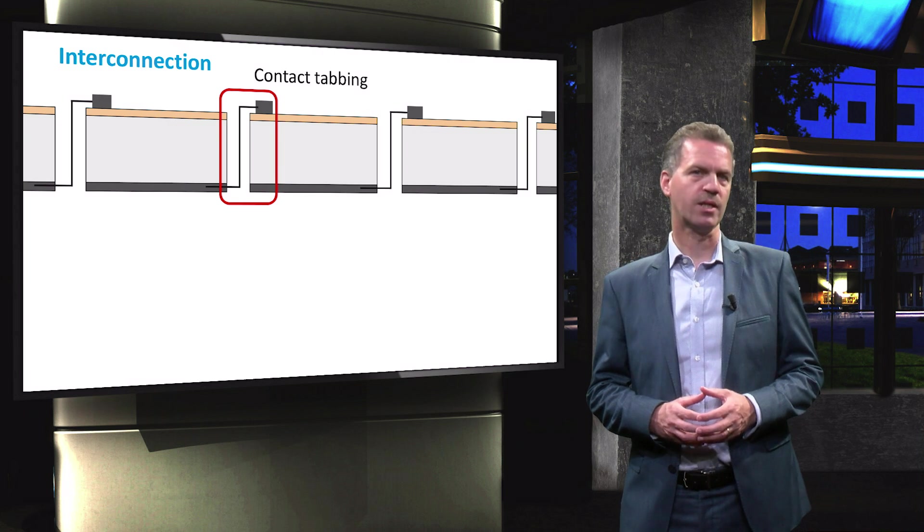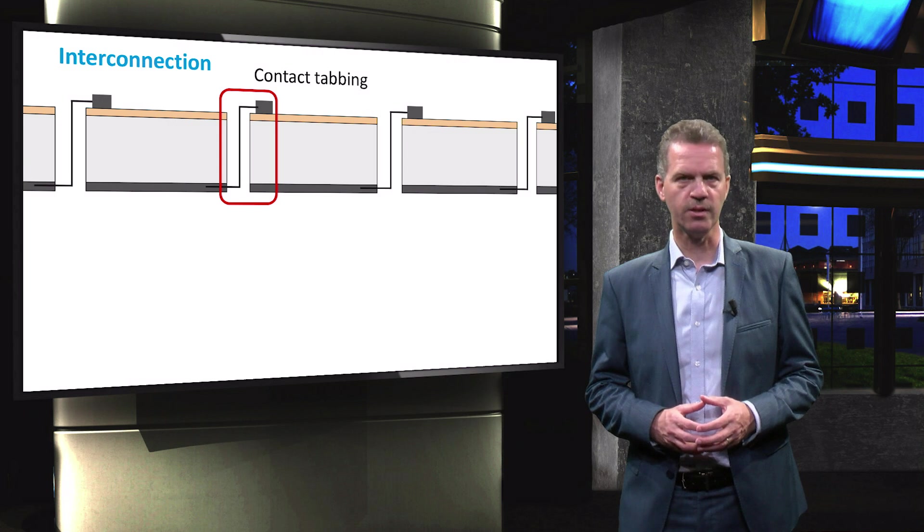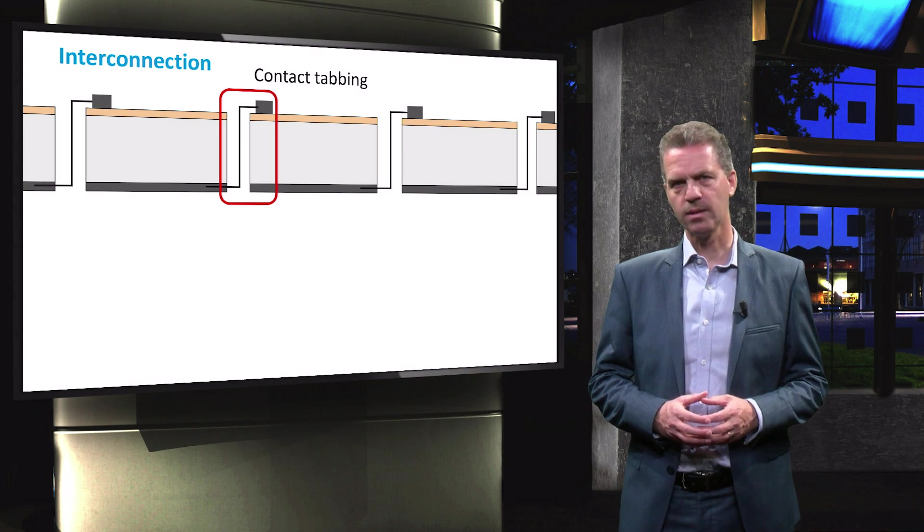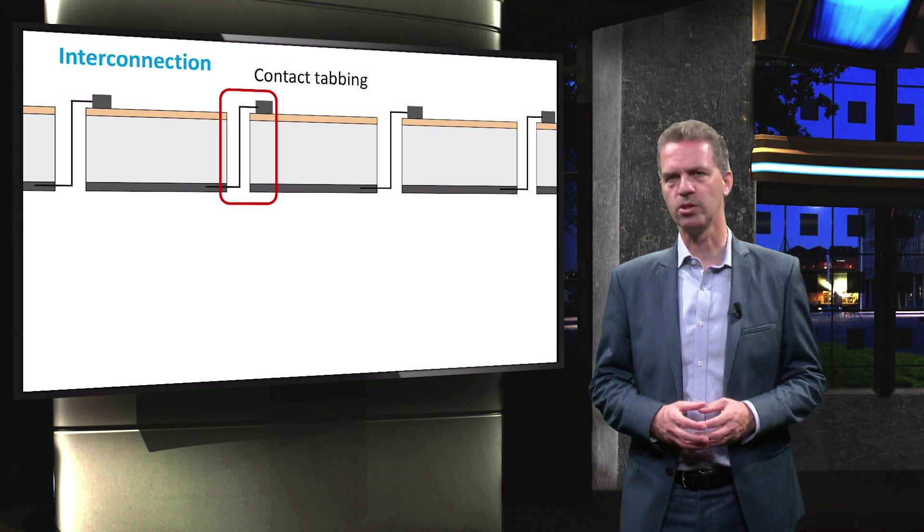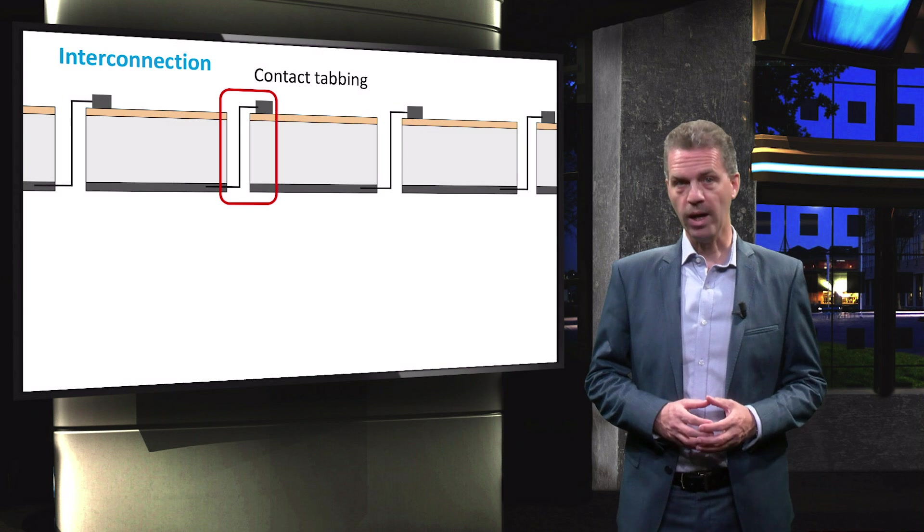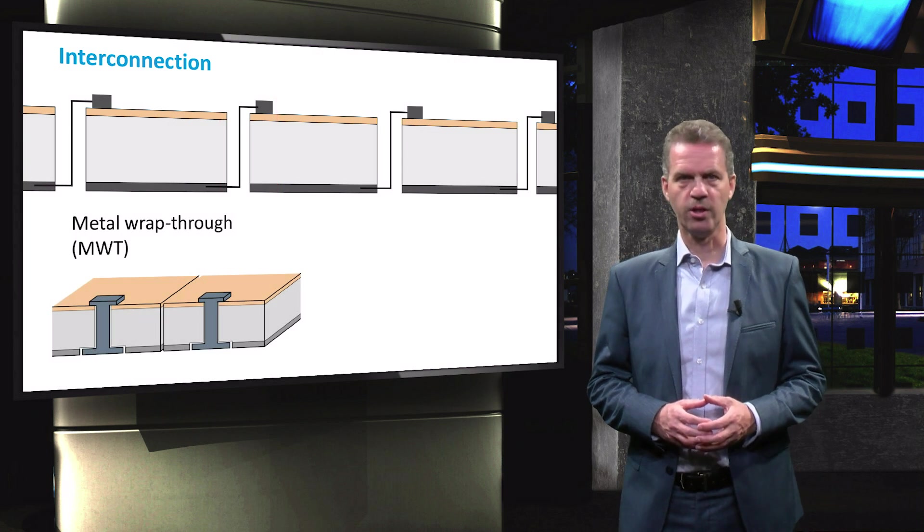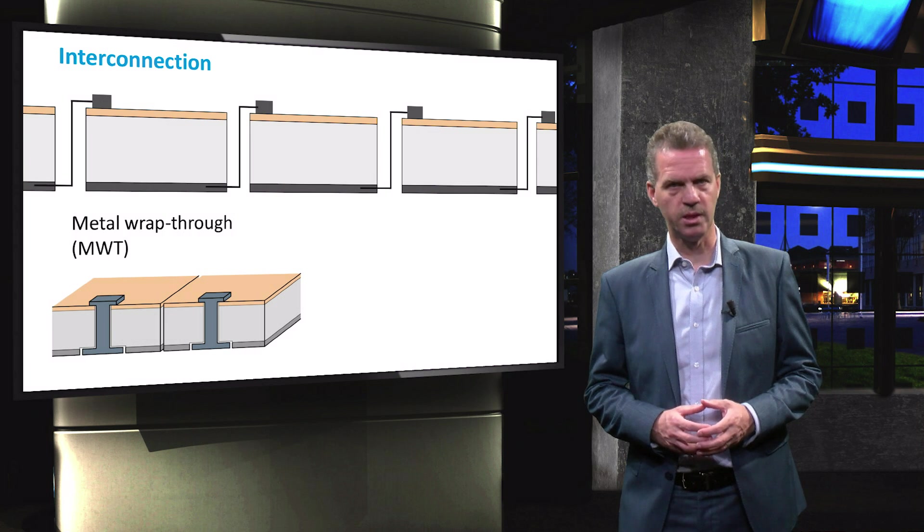Here you see a cross-sectional view of a few solar cells connected in series. Such a series connection is called a string. There are other ways to interconnect solar cells, such as the metal wrap-through technology.